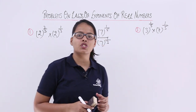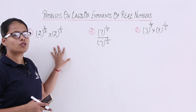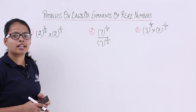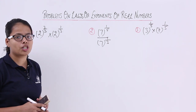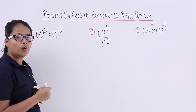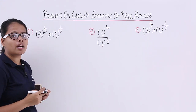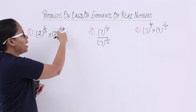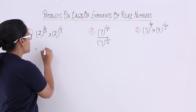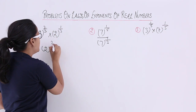So now let's start with our questions, which says 2 raised to power 2 by 3, multiplied by 2 raised to power 1 by 3. You can see here that this expression exactly looks like the first law expression which I have already discussed. In this, you can see the bases are the same, which are 2 and 2, and the exponents are rational numbers: 2 by 3 and 1 by 3.